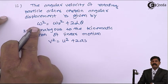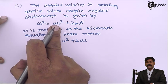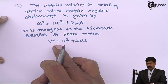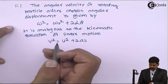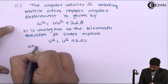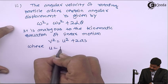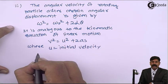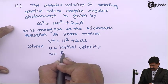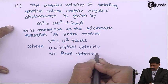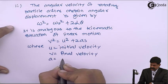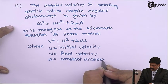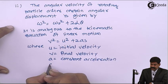These are the analogies: omega squared equals omega zero squared plus two alpha theta, corresponding to v squared equals u squared plus two as, where u is initial velocity, v is final velocity, a is constant acceleration, and s is linear displacement.